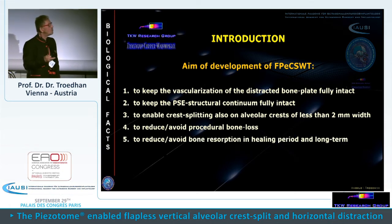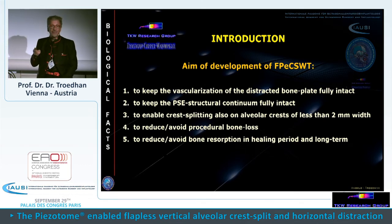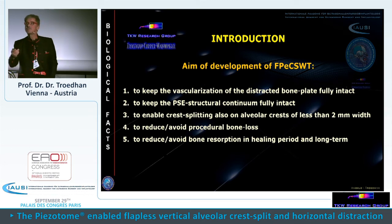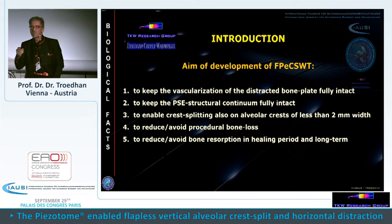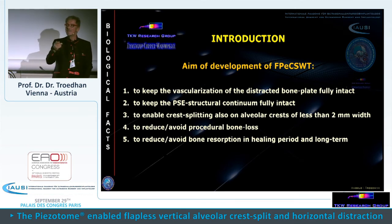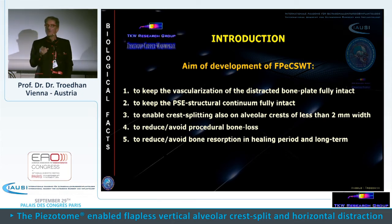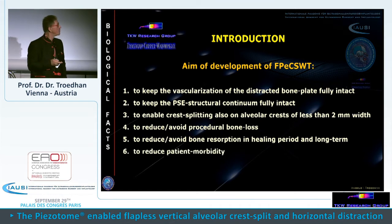Fifth, we wanted to reduce and avoid bone resorption in the healing period — this is why we targeted the flapless procedure. If you don't remove the periosteum from the bone you're operating on, you don't interrupt the nutrition of the bone, which means you don't interrupt vascularization, oxygen transport, or nutrition. The bone stays alive during the healing cycle, and you will not lose bone from creating a large mucoperiosteal flap.